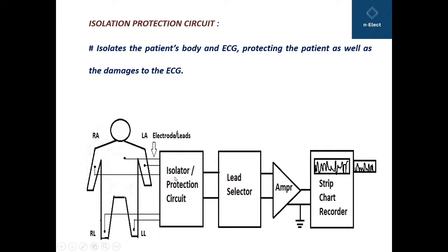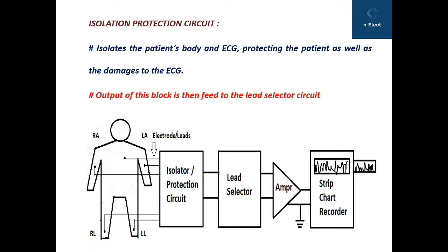The next block is the isolation protection circuit. It basically isolates the patient's body from the ECG, protecting the patient as well as preventing damage to the ECG — so it provides separation. The output of this block is then fed to the lead selector circuit.